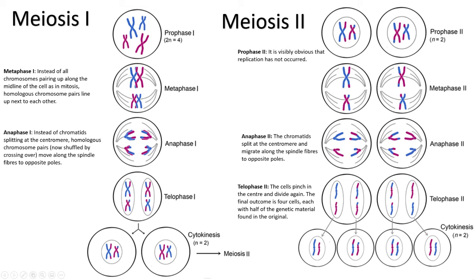Here's a second visual of the same process — it might help if you're struggling to visualize some aspects of it. I've pointed out a few key points: in meiosis one, the chromosomes pair up along the midline with homologous chromosomes next to each other, rather than being pulled apart at the centromere like in mitosis. In metaphase two, the arrangement does look similar to mitosis, but in metaphase one what actually happens is the homologous chromosomes pair up and get moved along the spindle fibers to opposite poles, retaining the paired chromatids.